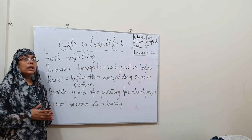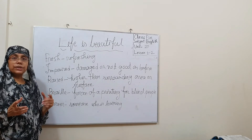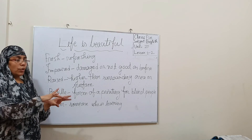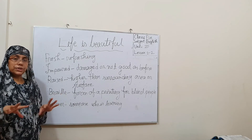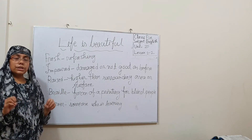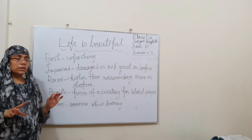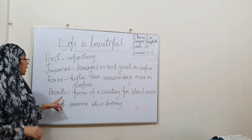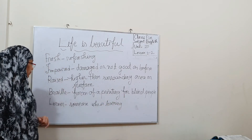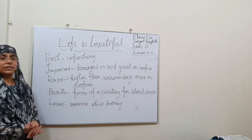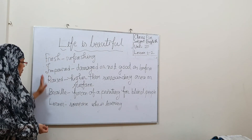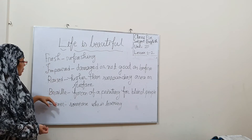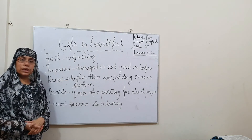Braille is a system for reading used by blind students. Because they cannot see, they use their hands — they put their hands on letters and by touching them they can understand what letter it is. They can read by touching the Braille system. Braille is a form of printing for blind people. The last word is 'learner' — someone who is learning. If you read and learn all these new words, you will find the text very easy.